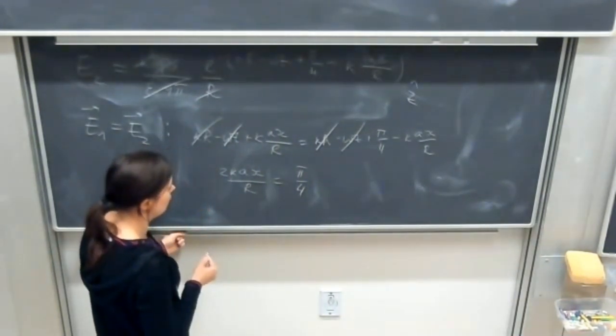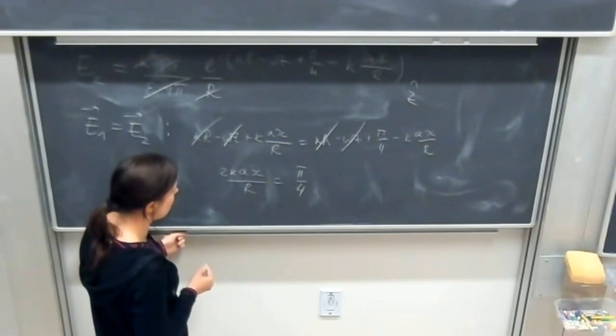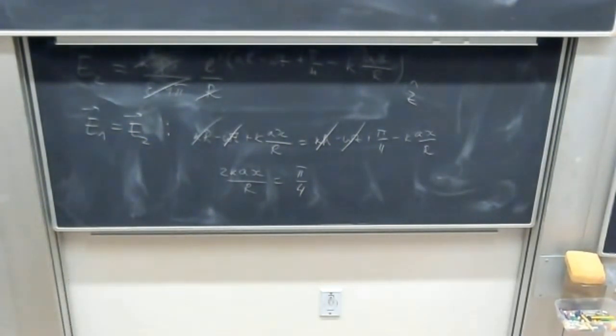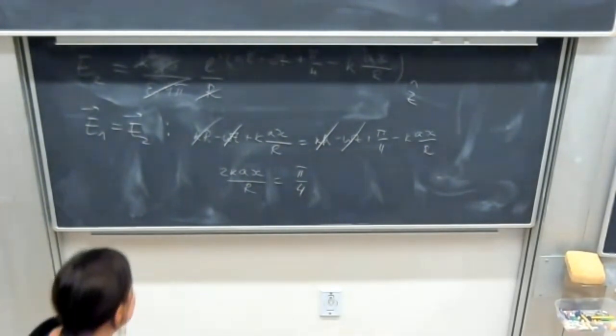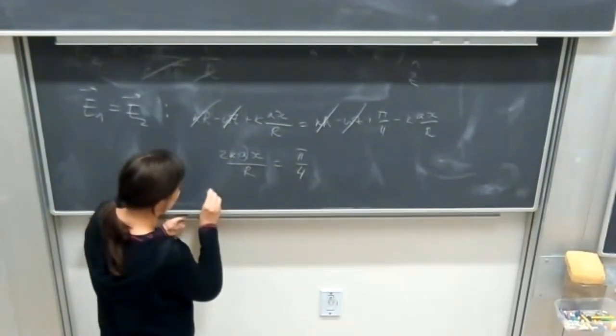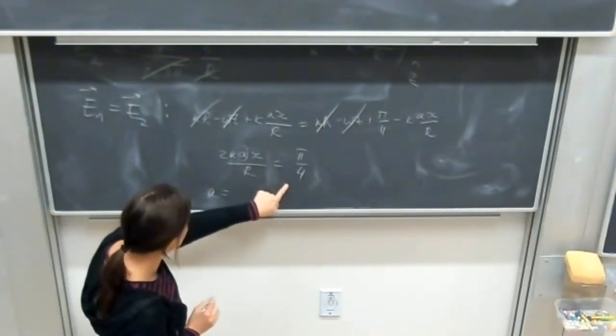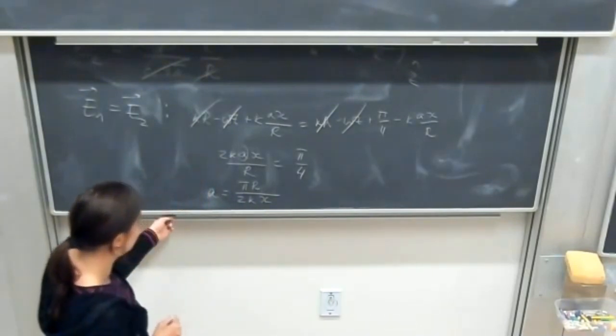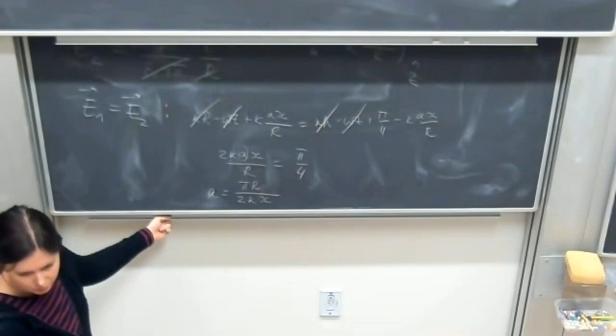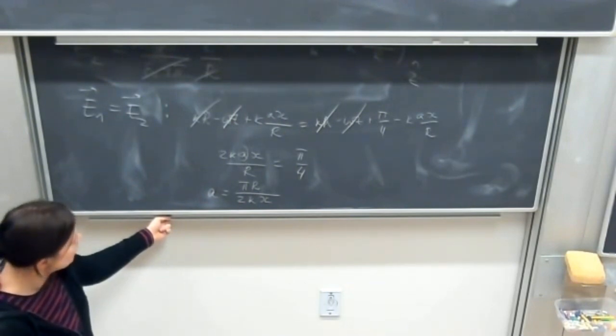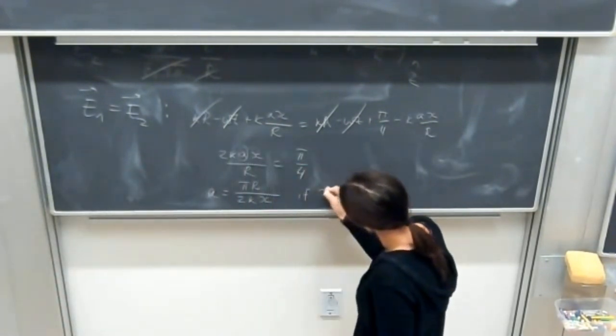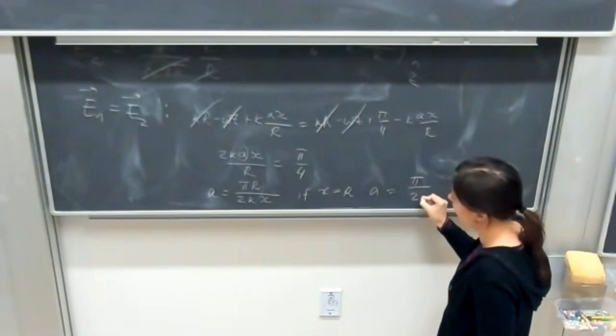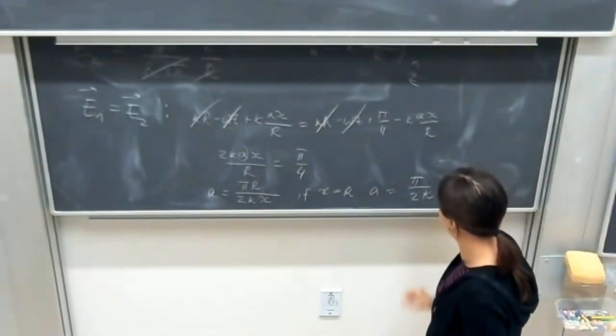We need to find a. So a for this case is pi r by 2k x. And if we would assume that x would be equal to r, then a is equal to pi divided by 2k and that's the answer.